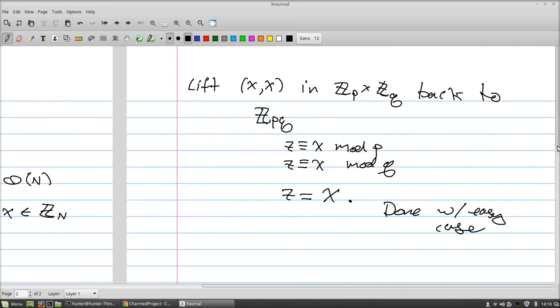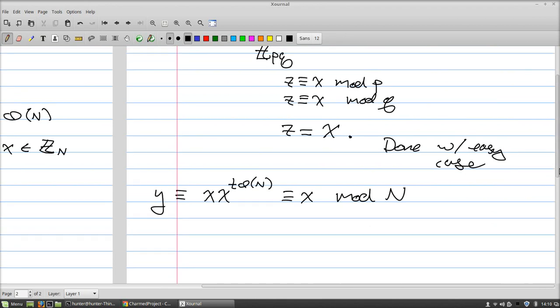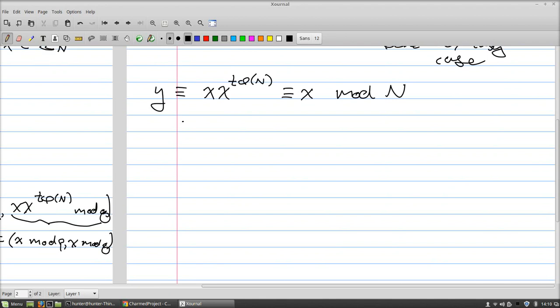The answer is obviously x, and so we're done with the easy case because what we've just shown is that x times x to the t times φ(N) is just congruent to x mod N, and of course this thing was just y in disguise. The easy case is finished.